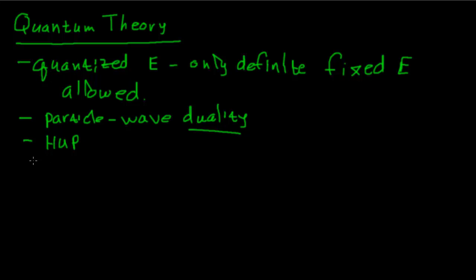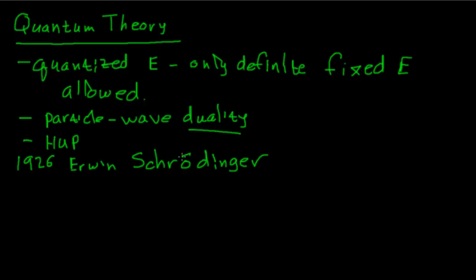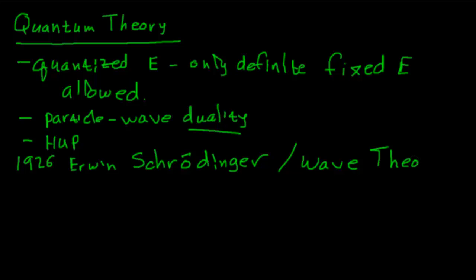Taking all these ideas together, in 1926 a physicist named Erwin Schrödinger — with an umlaut over the 'o' — took these ideas and put them together into a wave equation. He knew the physics of waves and wrote down a wave equation that agrees with all these properties for matter. That's called the Schrödinger equation, or sometimes the wave equation. This quantum theory is sometimes called quantum mechanics or wave mechanics because it's based on this wave equation.